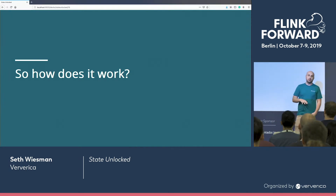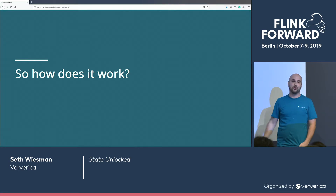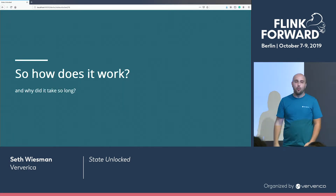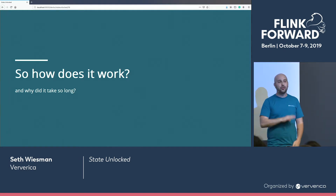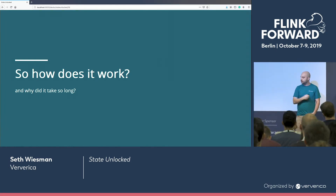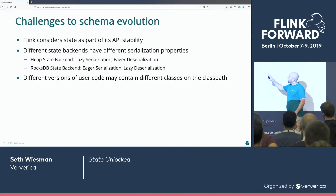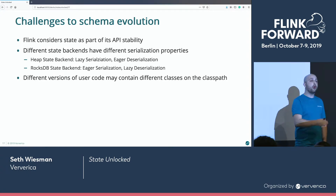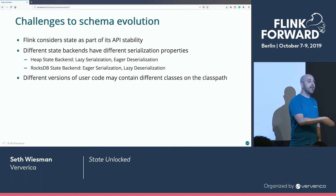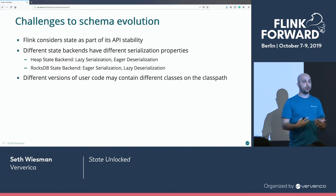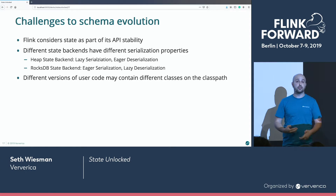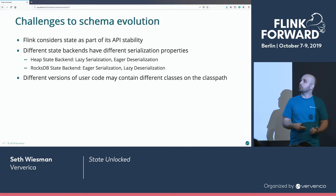But this conference wants to know more than just what you can do — how does it really work under the hood? And even more important, why did it take so long? State is a core piece of Flink, and it's only since about 1.8 that we've had true first-class support for schema migration. The problem is we consider state part of our API stability — you will always be able to take a savepoint on one version of Flink and restart it on the next. That means whatever we serialized in that old version, we still have to be able to read those bytes out, and every change we made needed to be backwards compatible.